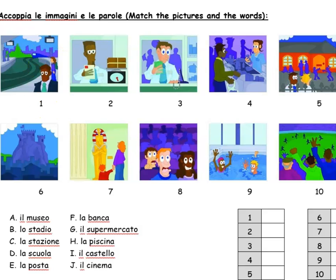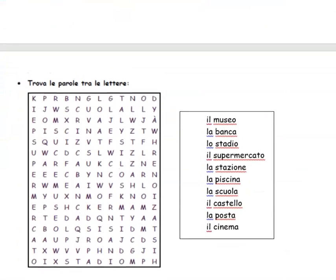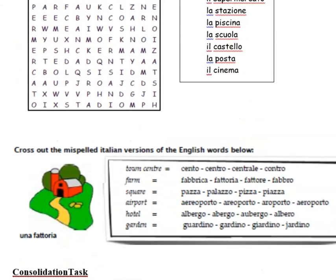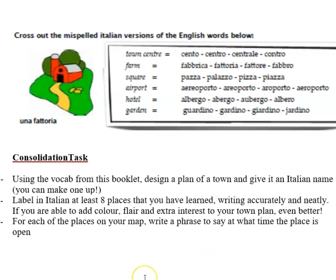Hopefully you got on okay with those tasks. As I said, you can send me your marks. I'm not going to run through the word search answers — you can find those yourself. For consolidation work, if you'd like to send it in, please use the MFL help email address: mflhelp@heworthgrange.org.uk. Also, for the misspelt words task — only one was right. The town center is 'centro', farm is 'fattoria', the square is 'piazza', and the airport — they all look similar but the only one spelt right is 'aeroporto'. The hotel is 'albergo' and a garden is 'giardino'. Hope you've done okay — see you soon for your next video lesson, ciao ragazzi!